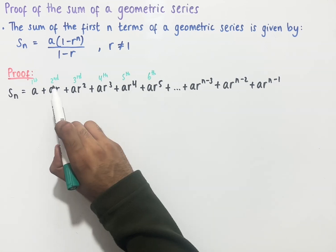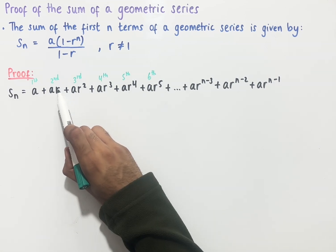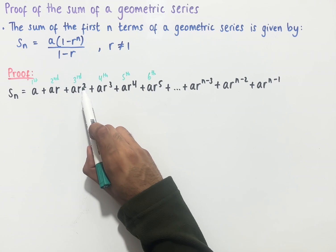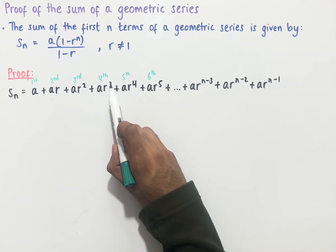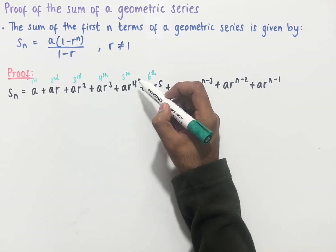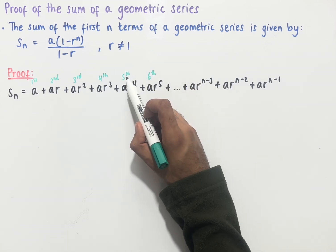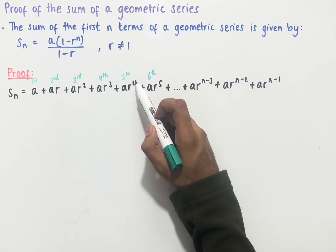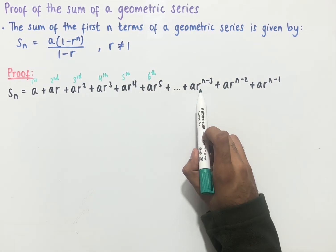For the second term the power of r is 1, for the third term the power of r is 2, for the fourth term the power is 3, for the fifth term the power is 4, and so on. So we can see that whatever position we have, if we subtract 1 from it we end up with the power of r, and so if the power of r is n minus 3...